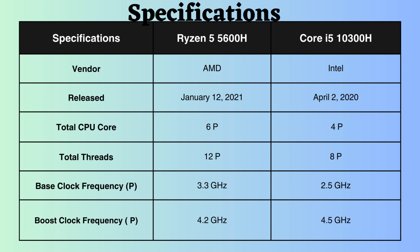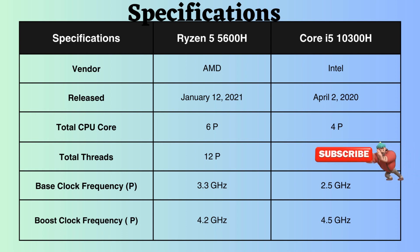The Ryzen 5600H exhibits a higher base clock frequency compared to the Intel 10300H, making it advantageous when the CPU is under normal load. While the Intel 10300H has a slightly higher boost clock frequency, its lower core count compared to the Ryzen 5600H means it may not perform as effectively, especially under heavy CPU loads.